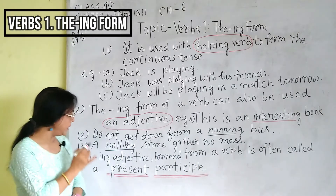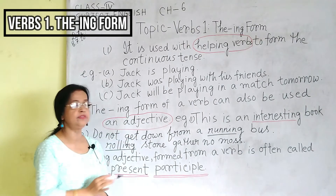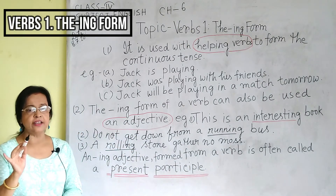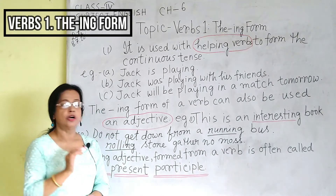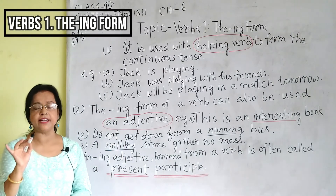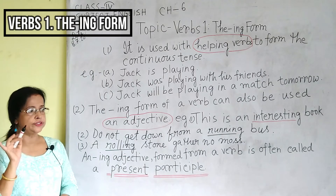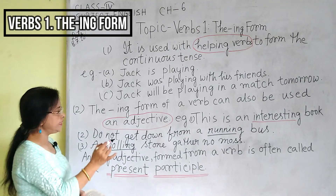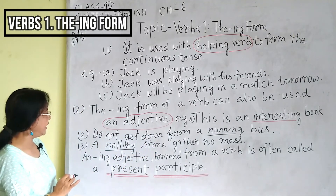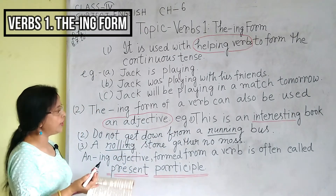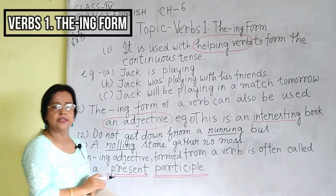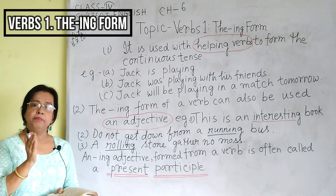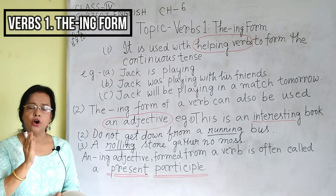An ING adjective formed from a verb is often called a present participle. You will see that it is placed before a noun. Here, 'running' is the present participle and 'bus' is the noun. In 'a rolling stone,' 'stone' is the noun. The present participle is always placed before a noun and also qualifies the noun.